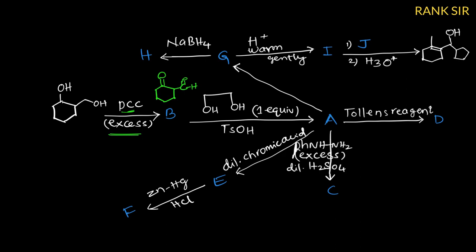Then product B reacts with ethylene glycol one equivalent in acidic medium, TsOH means para-toluene sulfonic acid. In acidic medium, aldehyde and ketone are both present. Aldehyde is more reactive. Therefore, it forms a cyclic acetal with ethylene glycol and ketone remains as it is.